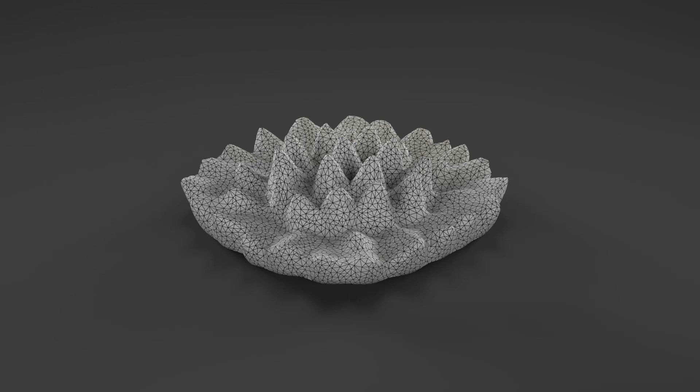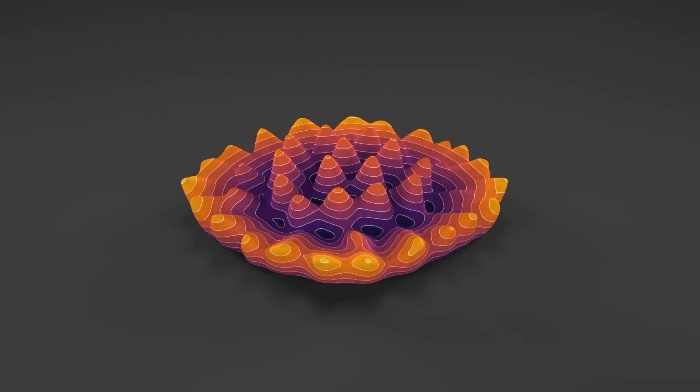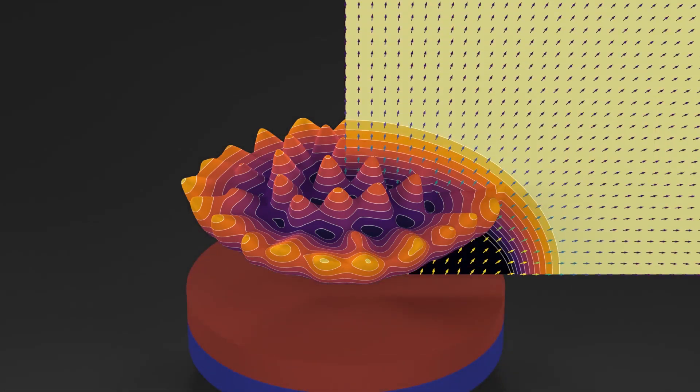The fluid's free surface is represented by a triangle mesh. The magnetic scalar potential is computed as the integral of the external magnetic field. For a given cylindrical magnet located below the fluid, the magnetic field lines are shown here.